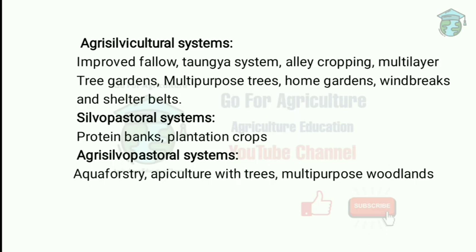Apiculture with trees means trees used for honey production. In aquaforestry, trees lining fish ponds and tree leaves are used as forage for fish. Multi-purpose woodlands serve various purposes such as wood, fodder, seed, oil production, and soil reclamation.